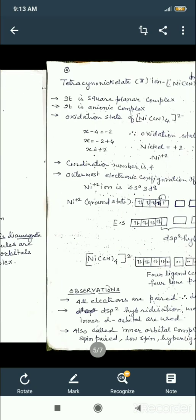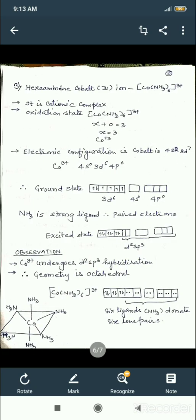Now see the third one: hexamine cobalt-3. In this case, this is a cationic complex with three positive charges on the complex sphere. To calculate the oxidation state, take x for the cobalt metal. Ammonia is neutral, so six times zero equals zero, and x equals three, so x equals three.